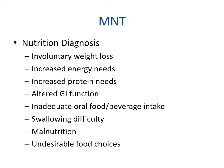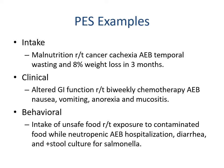Possible nutrition diagnoses include involuntary weight loss, increased energy needs, increased protein needs, altered GI function, inadequate oral food and beverage intake, swallowing difficulty, malnutrition, and undesirable food choices. Example PES statements include: malnutrition related to cancer cachexia as evidenced by temporal wasting and 8 percent weight loss in three months; altered GI function related to bi-weekly chemotherapy as evidenced by nausea, vomiting, poor appetite, and mucositis; and intake of unsafe food while neutropenic as evidenced by positive stool culture for Salmonella.